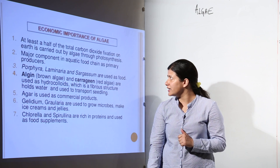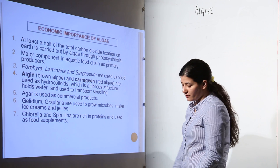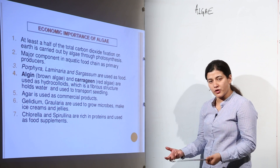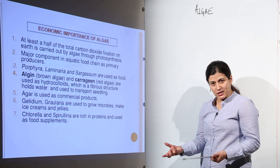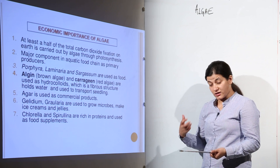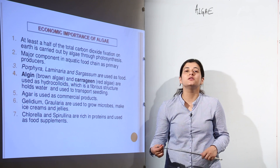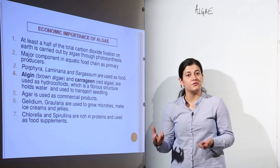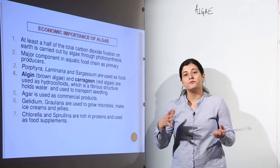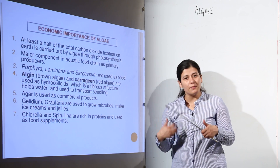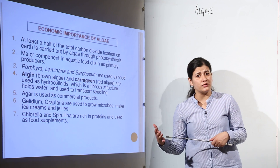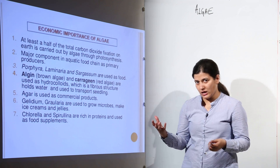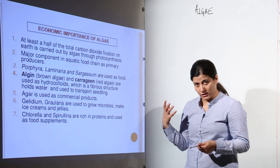The last topic is the economic importance of algae. The first key point is that maximum oxygen release and carbon dioxide fixation — that is, primary productivity — is done by algae. Algae are very important primary producers responsible for the greater amount of photosynthesis, giving them a very important autotrophic position.